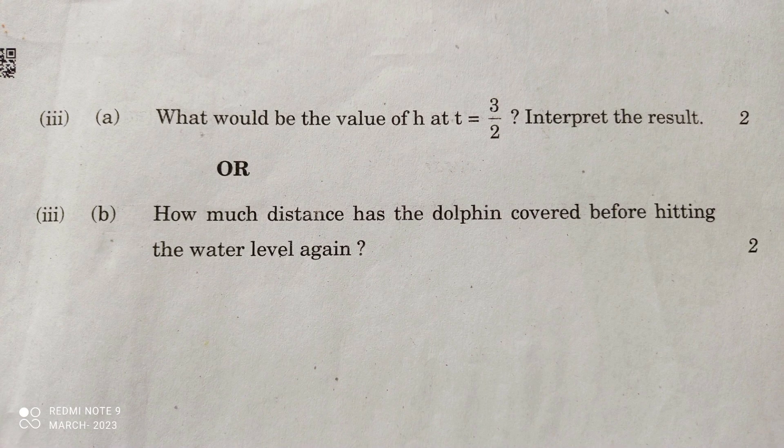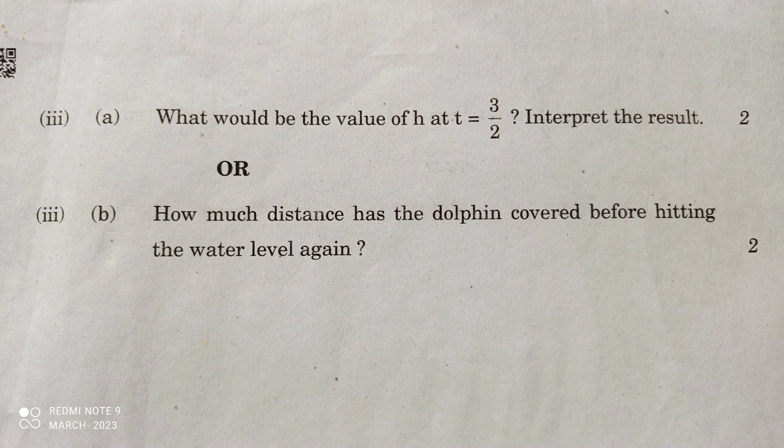The third question part. What would be the value of h at t = 3/2? Interpret the result. We know that p(t) = 20t - 16t². Substituting the value for t = 3/2.